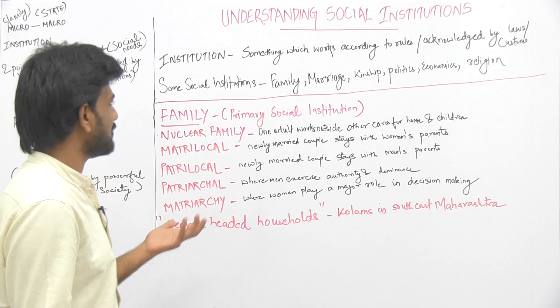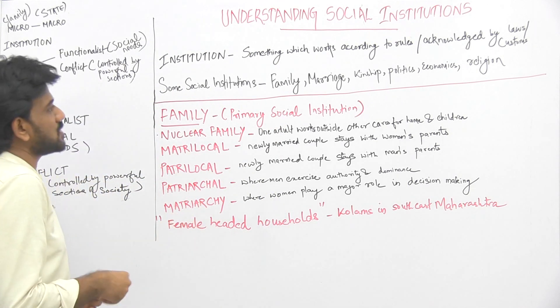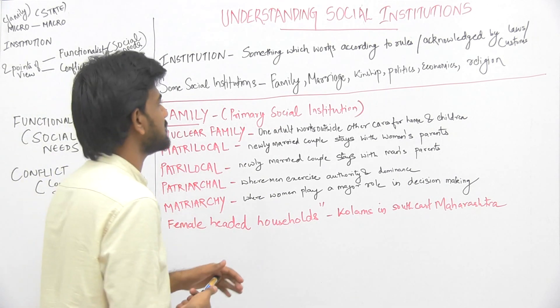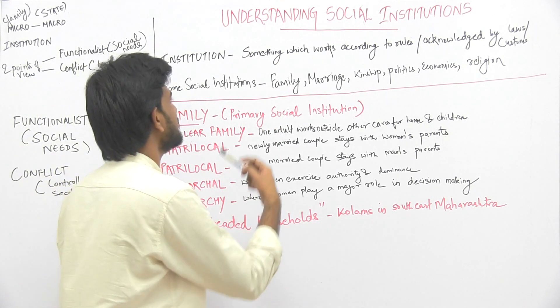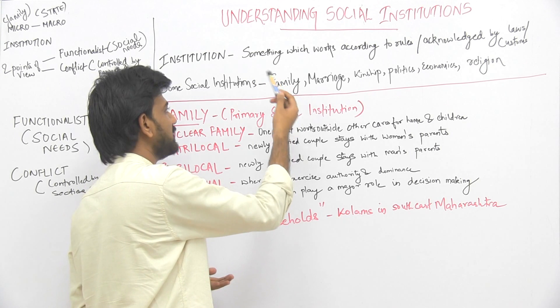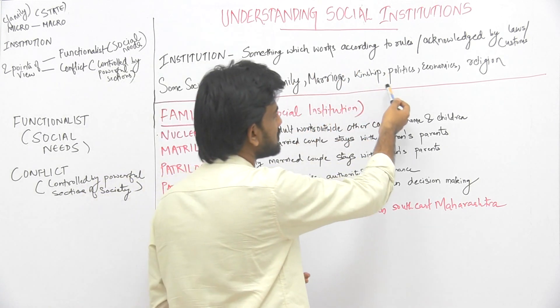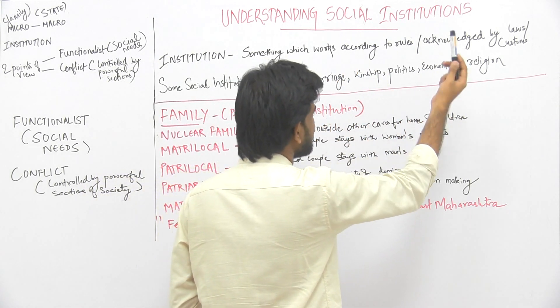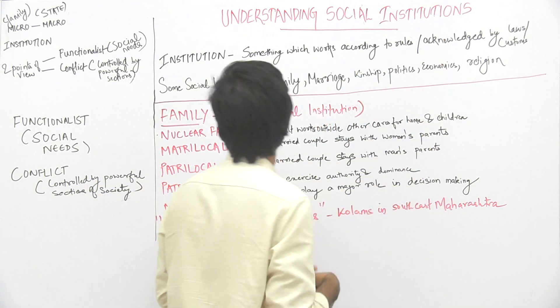Some of the major social institutions that exist in society are family, marriage, kinship, politics, economics, and religion.